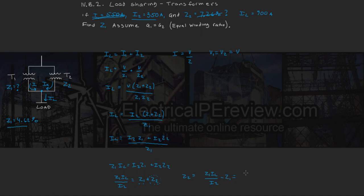So let's plug in our values, Z1 we know is 0.0462 times our load current of 900 amps divided by a current contribution from transformer 2 which is 350 amps.